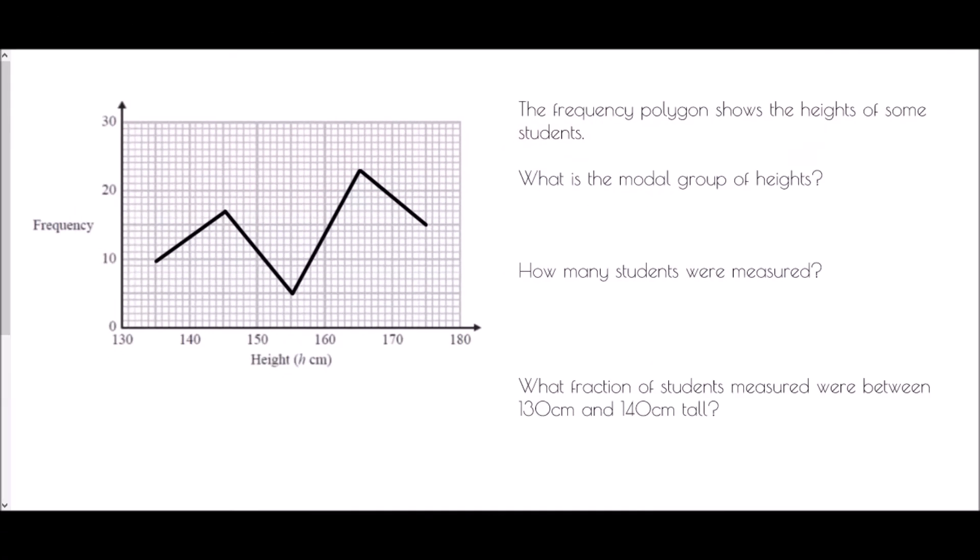Okay, so now we're going to look at actually reading some information from a frequency polygon. So in this case we've been given the heights of some students and we've been asked what is the modal group of heights. Now if we are dealing with the mode, mode always means most common, and so we're looking for the most frequent value. Well, if we have a look here, the most frequent is the highest point on the graph. Now the important thing is we were looking for what the group was.